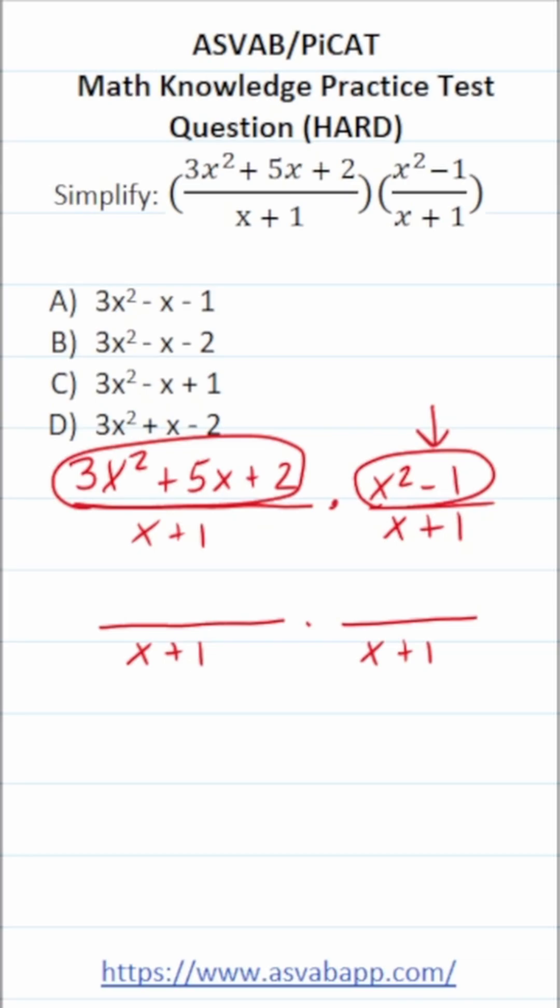Now, right here, we have the difference of squares. So in factored form, x squared minus 1 is going to be x plus 1, x minus 1.